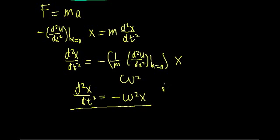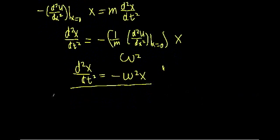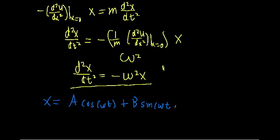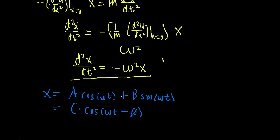With this differential equation, we know the solution — the solution is just going to be x equals A cosine(ωt) plus B sine(ωt). That's one solution. Or we could rewrite in the amplitude-phase form and say that x equals C times cosine(ωt − φ). There we have it — this is the equation that describes our simple harmonic motion.